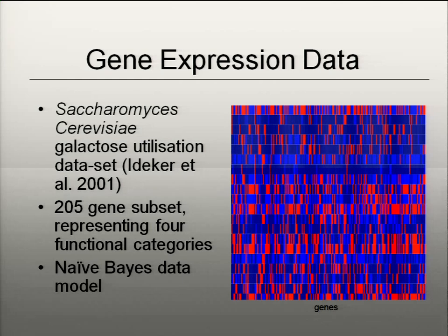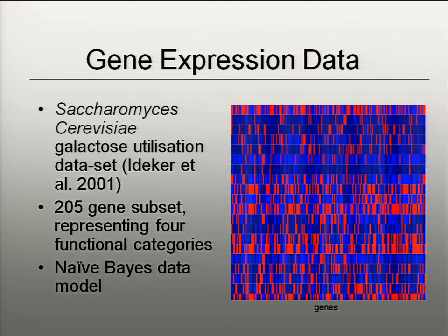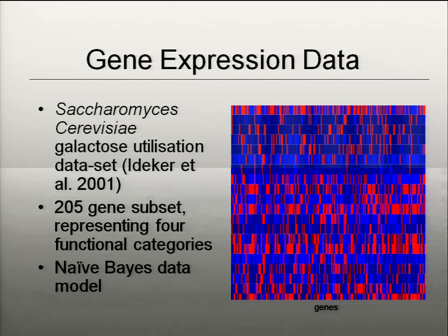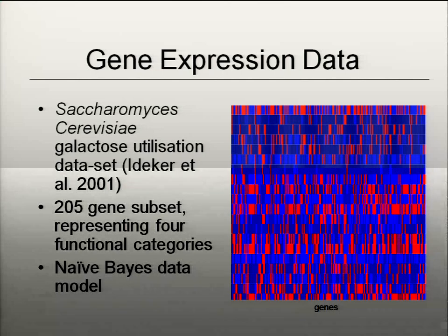This is a subject well-covered in the literature and it has four functional categories, which is nice. We use a simple approach to modelling it — it turns out that just discretizing the expression data into a few levels, so three different levels, you don't really lose much by doing that, which is perhaps surprisingly well-known in the literature now. So we take the data set and discretize it into three levels: red being over-expressed, light blue being regularly expressed, and dark blue being relatively under-expressed within each gene.